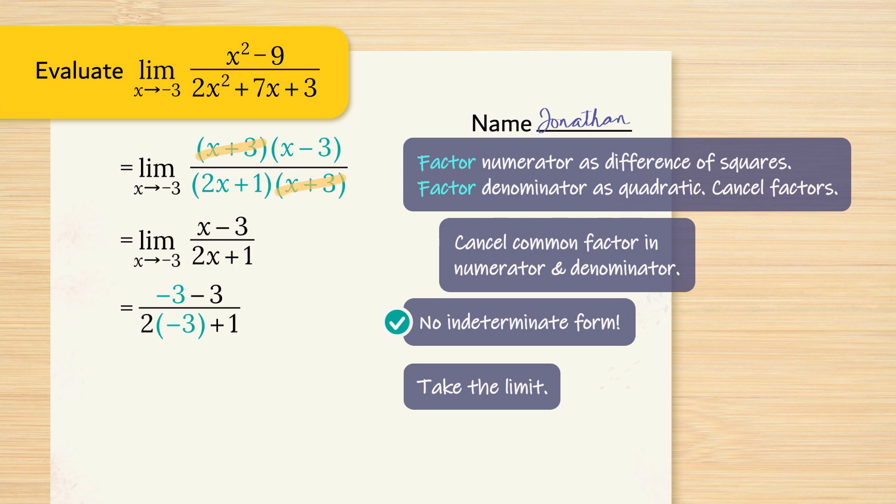Putting in x equals negative 3, we have negative 3 minus 3, and 2 times negative 3 plus 1. And simplifying, we have negative 6 over negative 5. The negatives cancel. Our answer is 6 over 5.